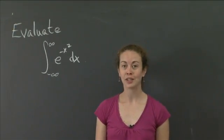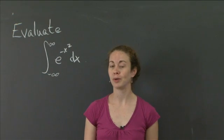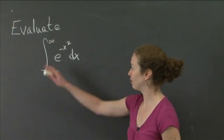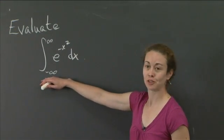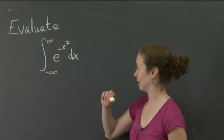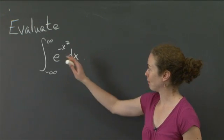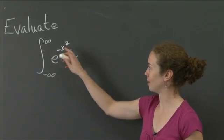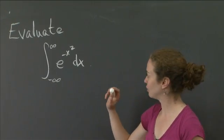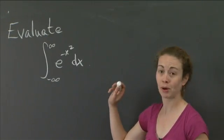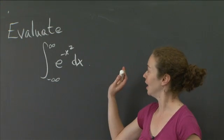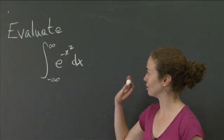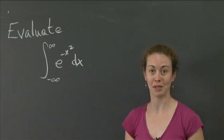Welcome back to recitation. In this video, I want to show how we can use change of variables to polar coordinates to evaluate an integral that without the change in variables, we don't have the techniques to do. I'm going to show us how to evaluate the integral from minus infinity to infinity of e to the minus x squared dx. If you do anything in probability, you will see this integral a great deal — it's a very important distribution.